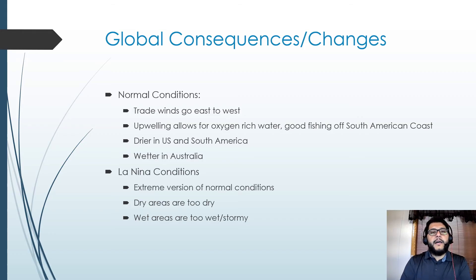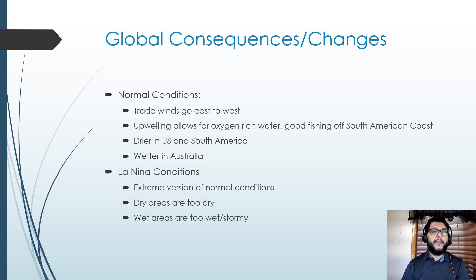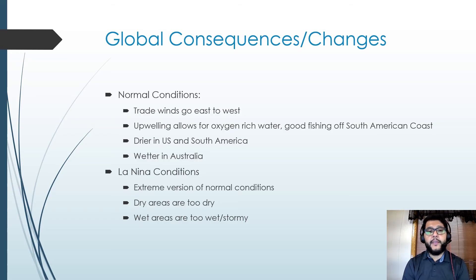Under normal conditions, trade winds move east to west, causing upwelling and really good fishing off the South American coasts. The US and South America will be drier, and Australia gets more wet with more storms and likely more cyclones. During La Niña — an extreme version — the southern United States ends up with a warmer than normal winter due to the shift in winds.